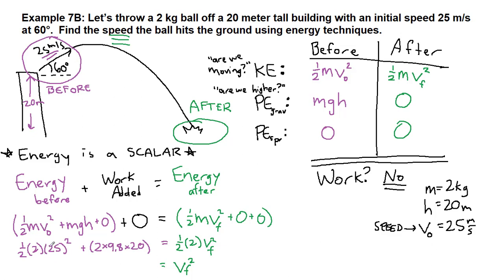So this first term was 625, the second term was 392. Added together, that's 1017.